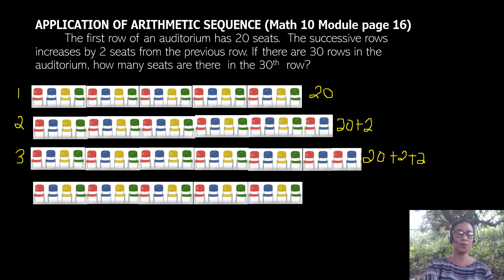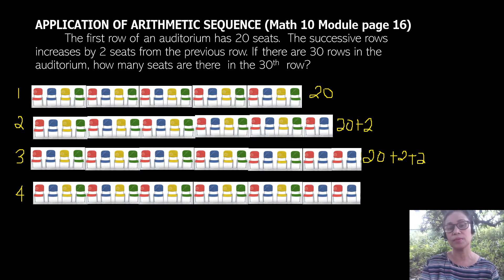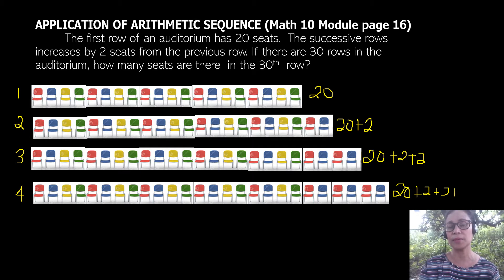The fourth row must have a plus 2, plus 2, plus 2. How many plus 2 is that? We have actually 3 plus 2. So we have plus 2, plus 2, and then the last one, plus 2.